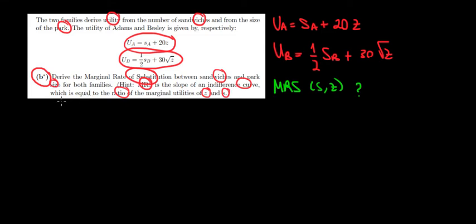Let's show it on a graph and understand the intuition of what we're doing over here. We have the relationship between sandwiches and the park size Z. An indifference curve is usually convex. We assume this to be a normal indifference curve like that.